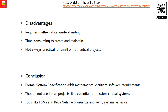Disadvantages of formal specification include the need for mathematical understanding, and it is time-consuming to create and maintain. It is not always practical for small and non-critical projects, as the overhead is too high for very small projects.